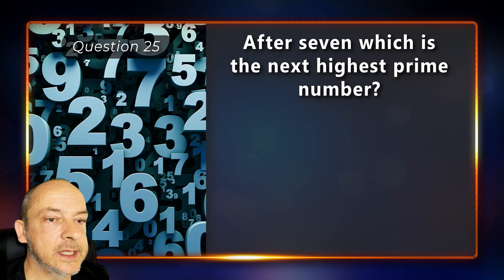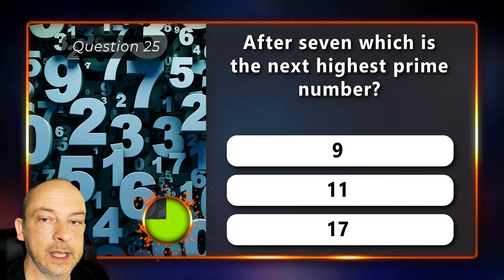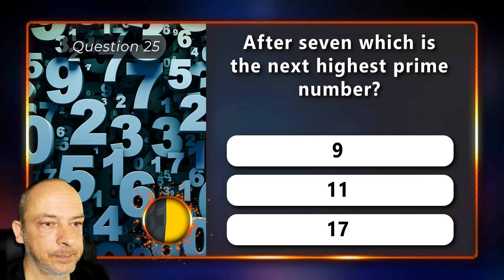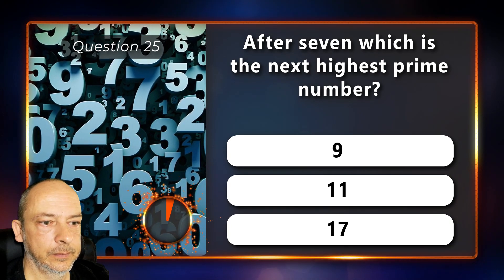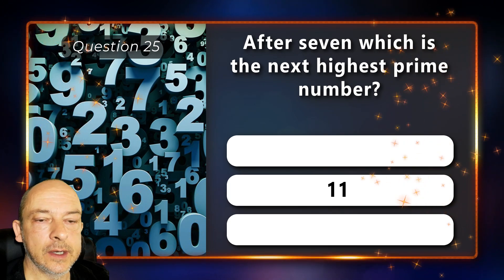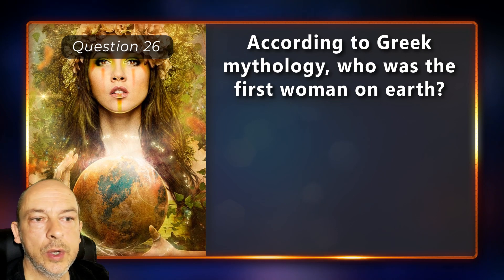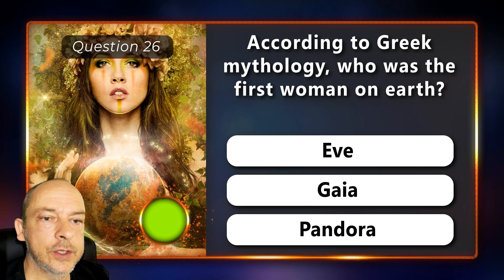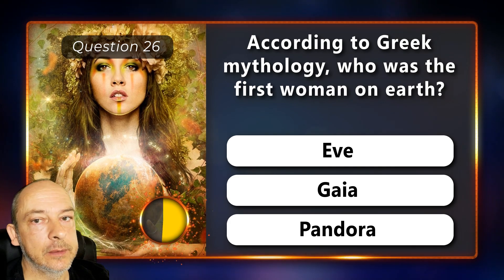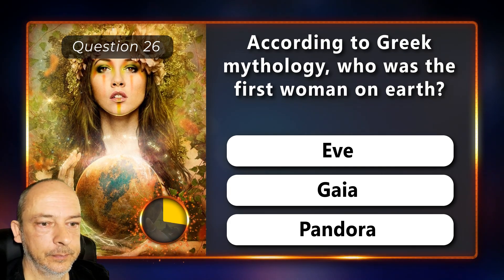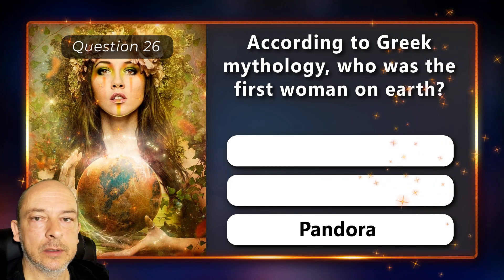After seven, which is the next highest prime number — is it nine, eleven, or seventeen? It is eleven. According to Greek mythology, who was the first woman on Earth — was it Eve, Gaia, or Pandora? Pandora.